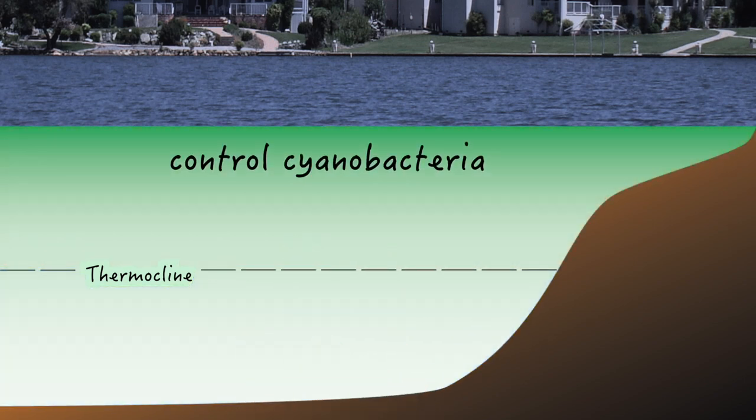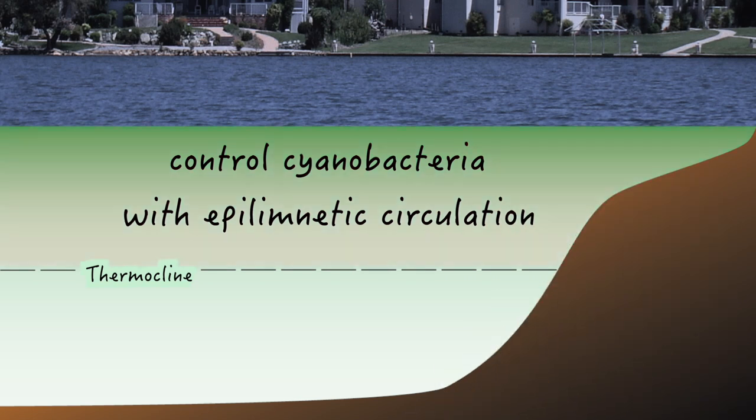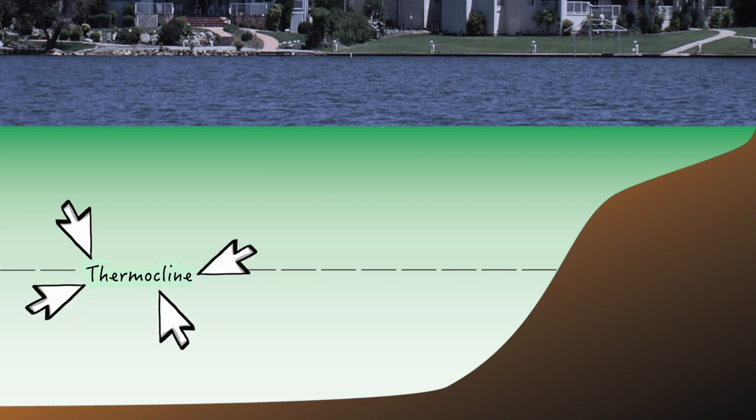The good news for cyanobacteria control is we only have to focus on the top warmer water to be effective. But being aware and mindful of the thermocline is important when setting the Solar Bee intake.